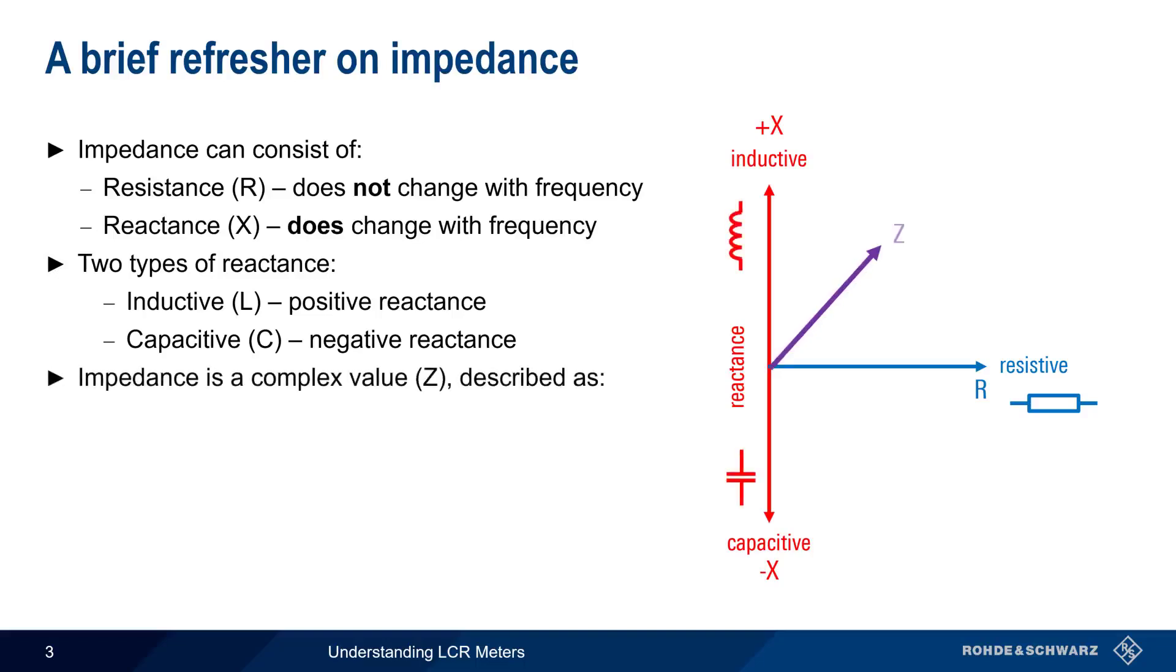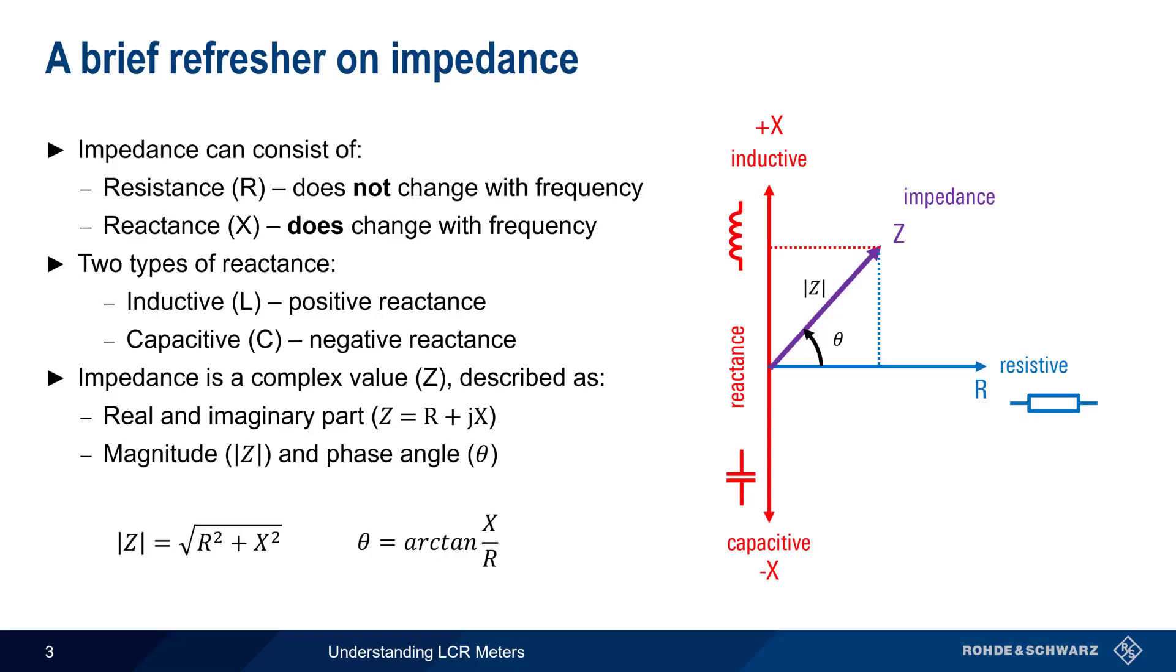Impedance, therefore, is a complex value which can be described in two ways. One way is as a real part and an imaginary part. Another way is as a magnitude and a phase angle. Two very simple formulas can be used to convert between these two different representations of complex impedance.